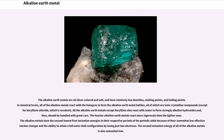All the alkaline earth metals except beryllium also react with water to form strongly alkaline hydroxides and, thus, should be handled with great care. The heavier alkaline earth metals react more vigorously than the lighter ones. The alkaline earth metals have the second lowest first ionization energies in their respective periods of the periodic table because of their somewhat low effective nuclear charges and the ability to attain a full outer shell configuration by losing just two electrons.